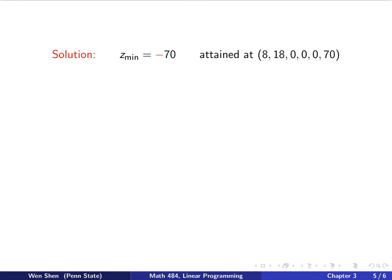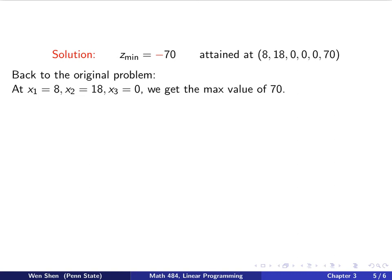So here is what I recorded. Remember to put the negative sign here. This is the solution of the LP problem in standard form, which gives us the minimum. Recall that the original problem was a maximization problem. Going back to the original problem: x1 is 8, x2 is 18, x3 is 0 — the first three variables are used, and the other three are slack variables. At that point, for the original problem, we get the maximum value of 70, which is the negative of the minimum.